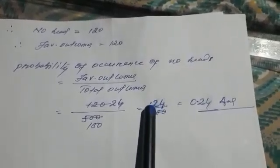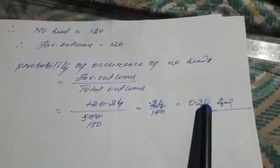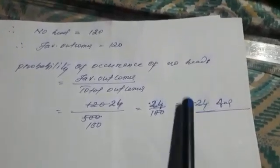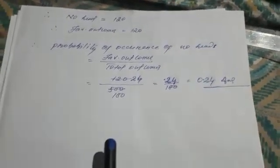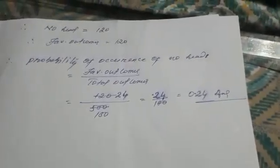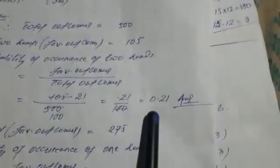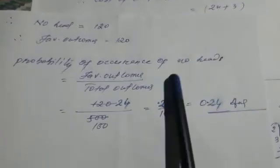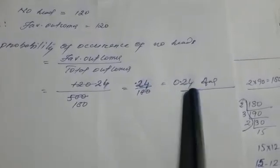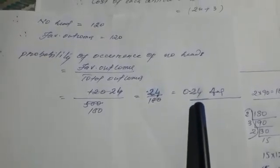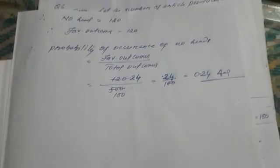Cancel the two zeros and place the decimal point — the answer is 0.24. That is the probability of getting no head. So we have three answers: two heads = 0.21, one head = 0.55, and no head = 0.24. This is Example 2.